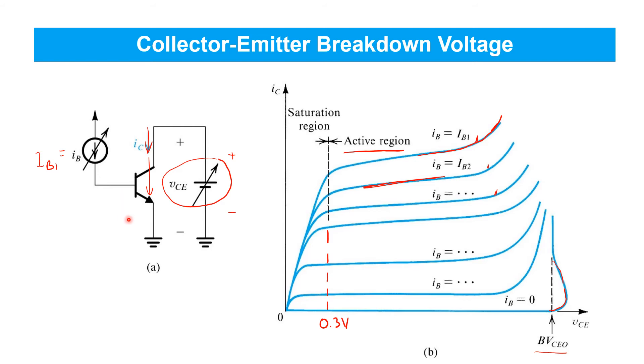However, if you reverse bias the emitter base junction, which we haven't talked about yet, but clearly that's another PN junction that can be reverse biased, that typically results in a permanent reduction in the transistor's beta, and that's not recoverable.